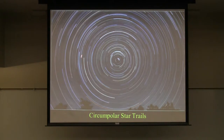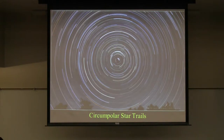These are called circumpolar stars and constellations — in a way that's a strange term because they all go around the north star. But what they mean by 'circumpolar' is specifically the ones that don't ever rise or set — they're always up.